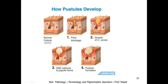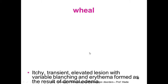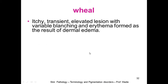How do pustules develop? An example is the common disease acne. You find a normal follicle with sebaceous glands, and when there is blockage of the pores through which the sebaceous material goes out, there will be growth of certain bacteria. Then the wall ruptures to form the pustule.